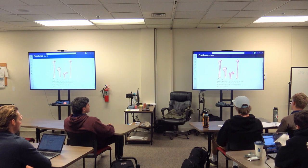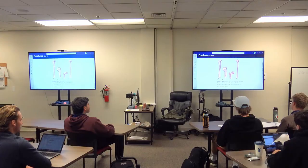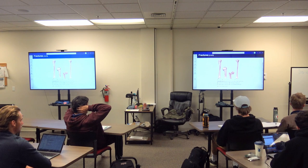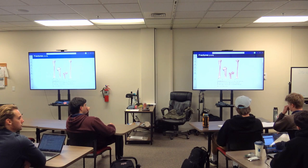Looking at fracture pictures: the first is a greenstick fracture, which kind of peels apart. Think of a green branch from a tree — a dry branch snaps, but a green branch peels without fully separating. Which demographic is more susceptible to greenstick fractures? Pediatrics — kids. Because children have softer, more malleable bones, greenstick fractures are very common in them.